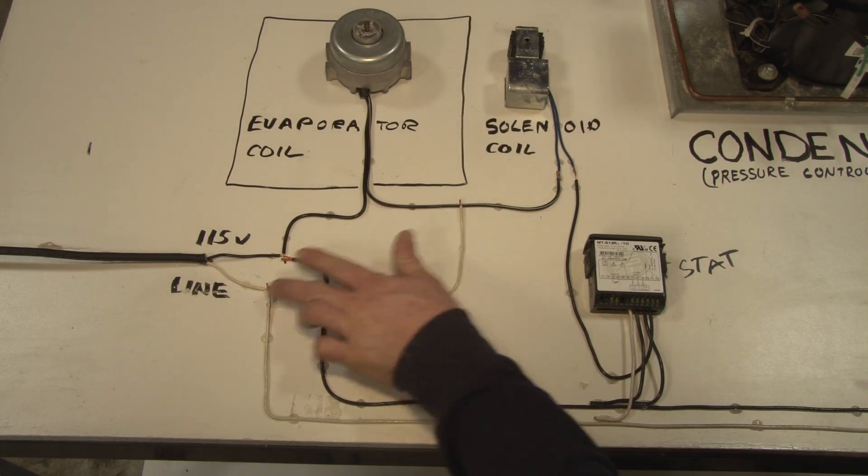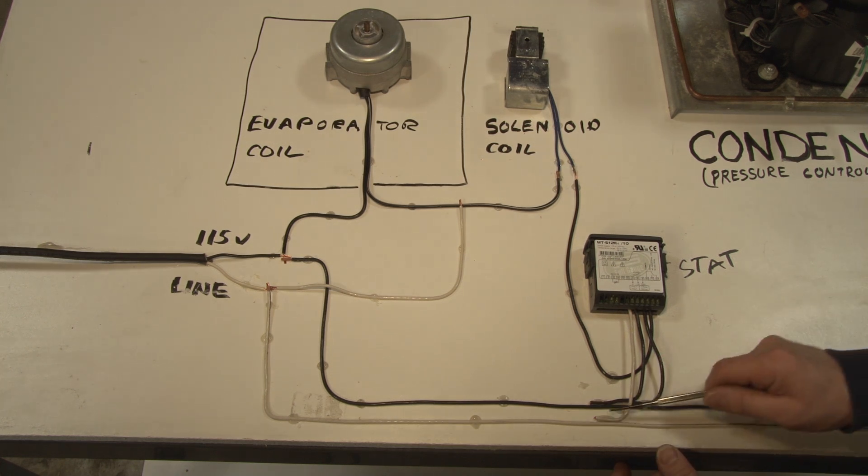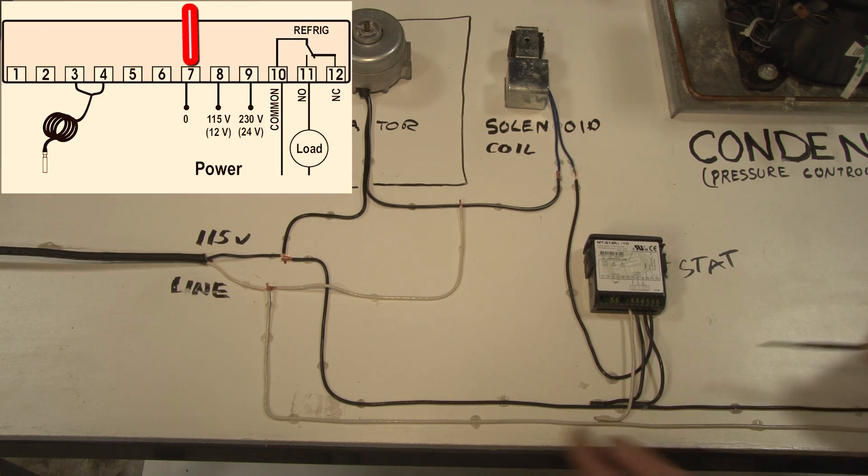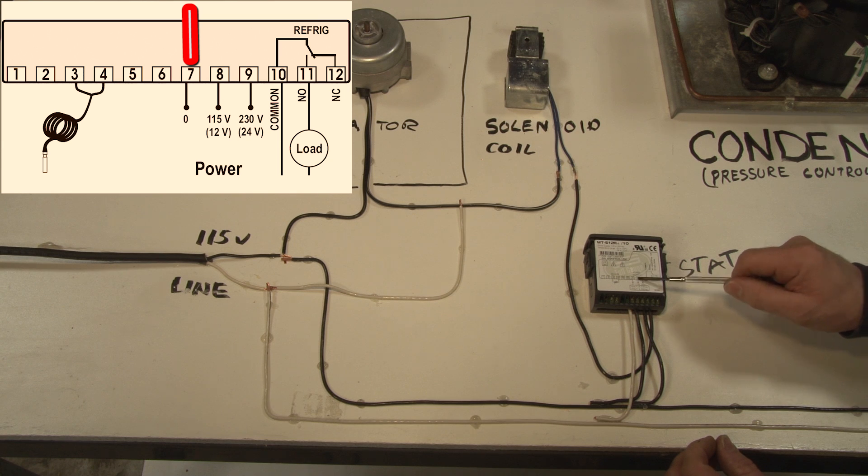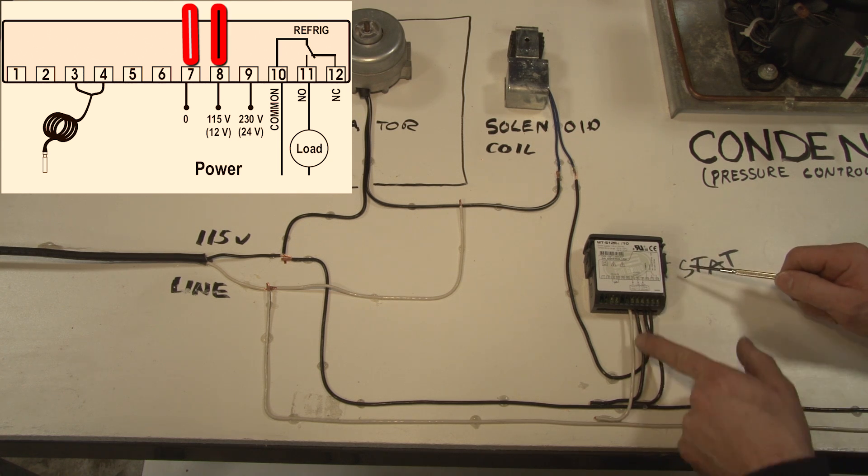And here's our 115 volt line which consists of a hot and a neutral. So terminal 7 is connected to our neutral. Terminal 8 is connected to our hot.